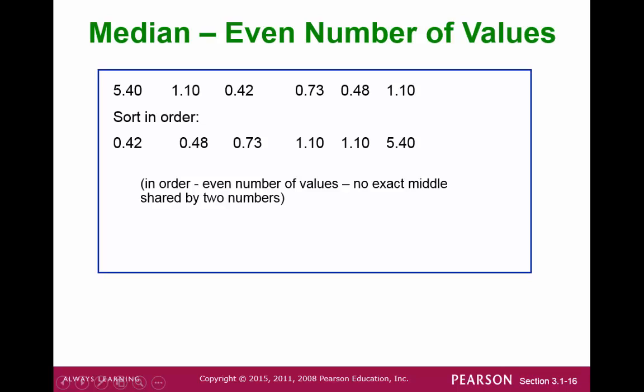Here's another example where we have an even number of values. After sorting, we look at the two middle numbers. Then, we find the mean of both of them. Then, the result is the median for our whole set.